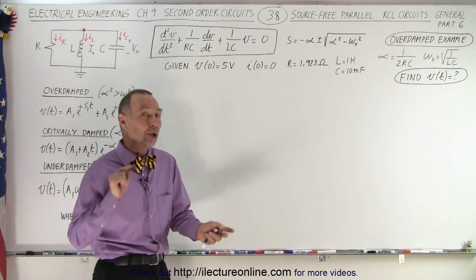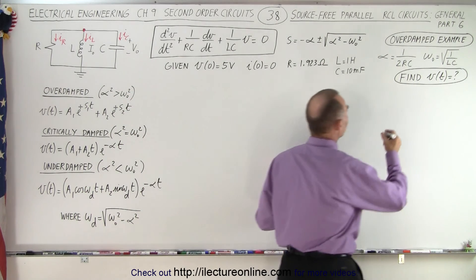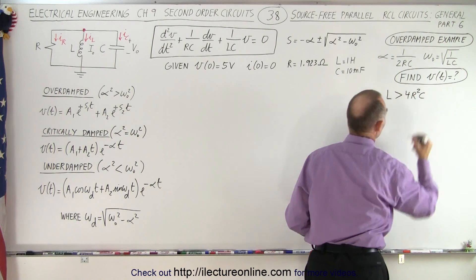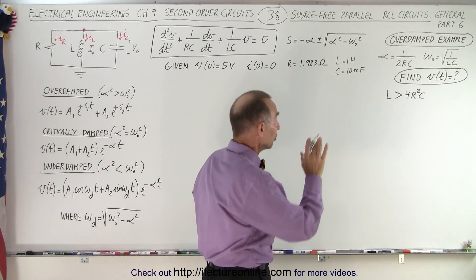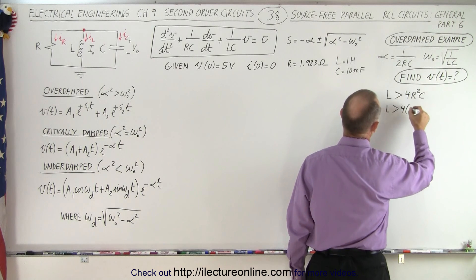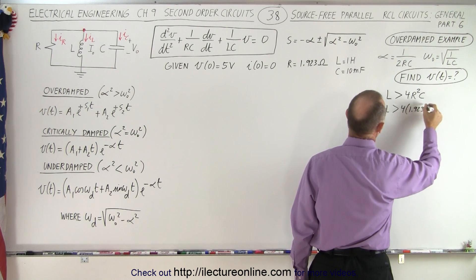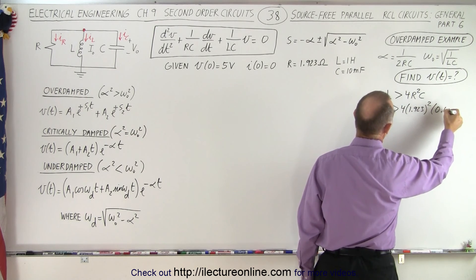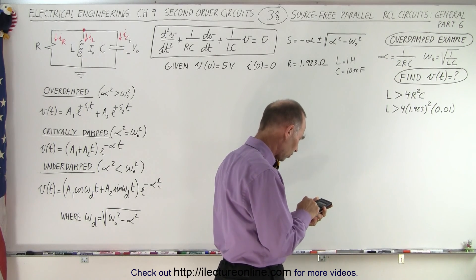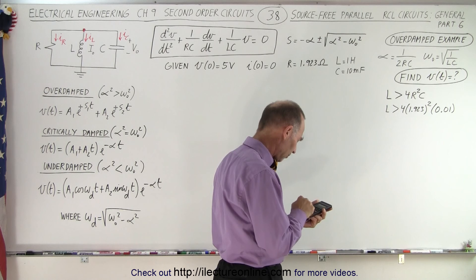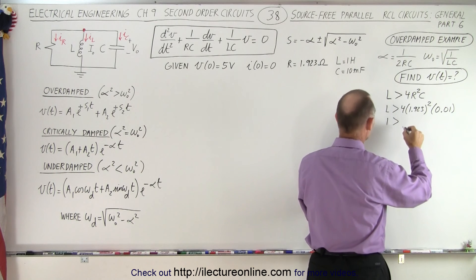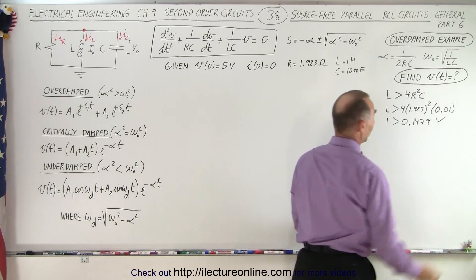The resistance is relatively small, but how do we know? There are different ways of checking it. We can verify by realizing that the inductance is larger than 4R² times the capacitance. So the inductance should be greater than 4 times R² — that's 1.923 squared — times the capacitance, 0.01 (10 millifarads). Calculating that: 4 times 1.923² times 0.01 equals 0.1479. The inductance being 1 henry is indeed larger than 0.1479, so that checks out.